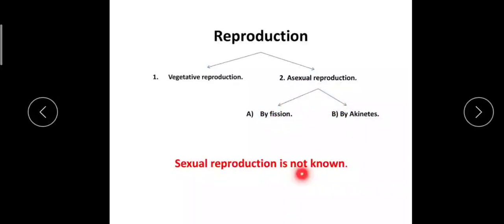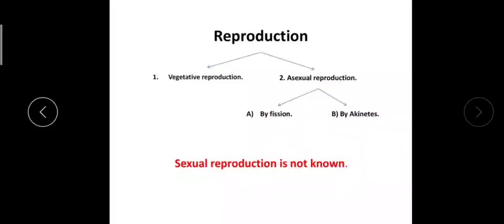Coming to hormogonia, hormogonias are short length filaments or short trichomes which have rounded ends. In case of Nostoc, these trichomes may break into a number of small pieces at the region where the heterocyst is present.